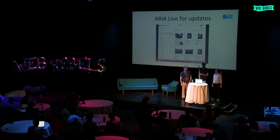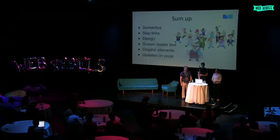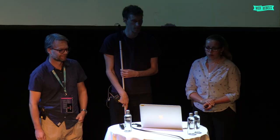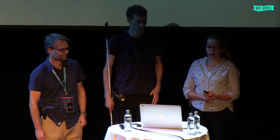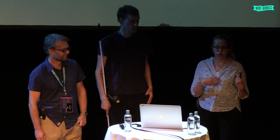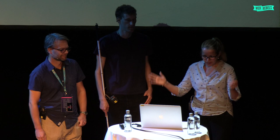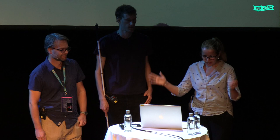To sum up, we've seen several examples of how to make your code more accessible with semantics, skip links, design that is hard to code, graphic elements like images and SVGs, and how to use ARIA for texts and updates on the page. But if you should remember one thing from this talk, remember to use plain HTML.